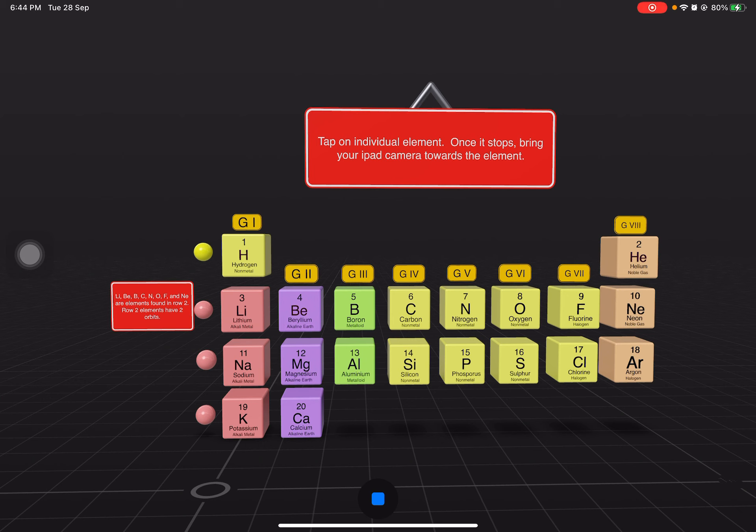Lithium, beryllium, boron, carbon, nitrogen, oxygen, fluorine, and neon are elements found in row two.